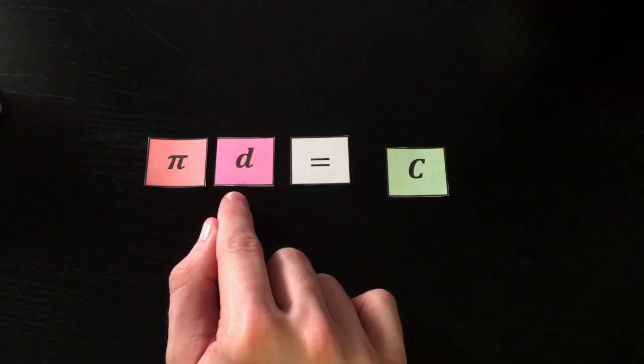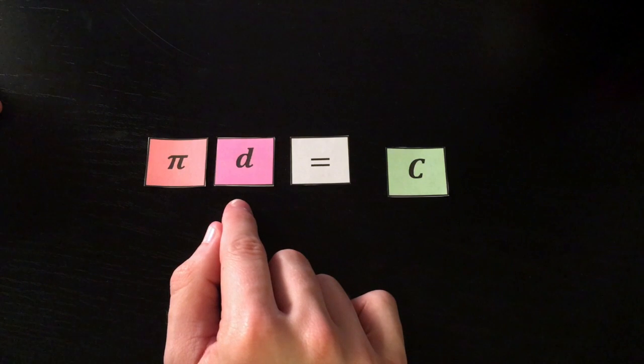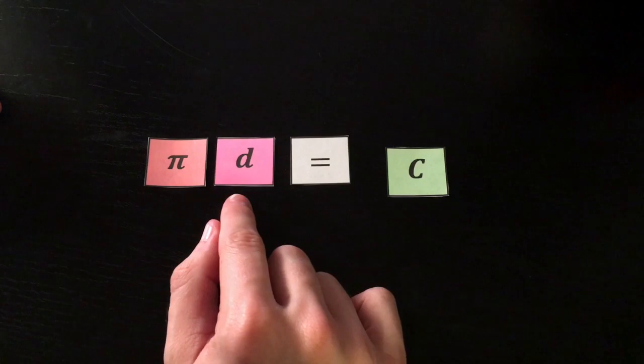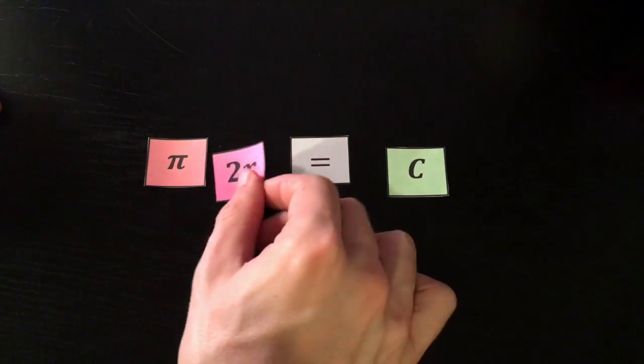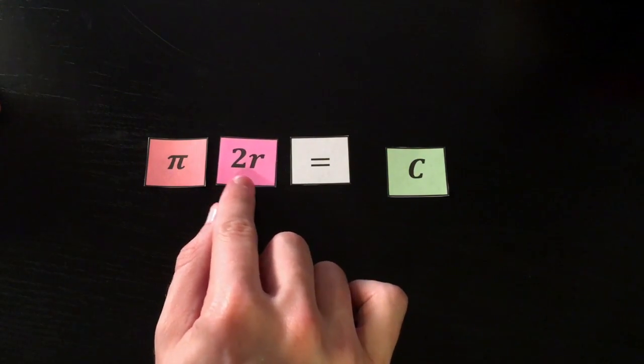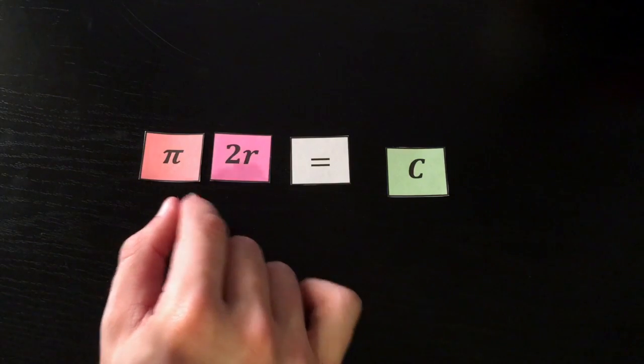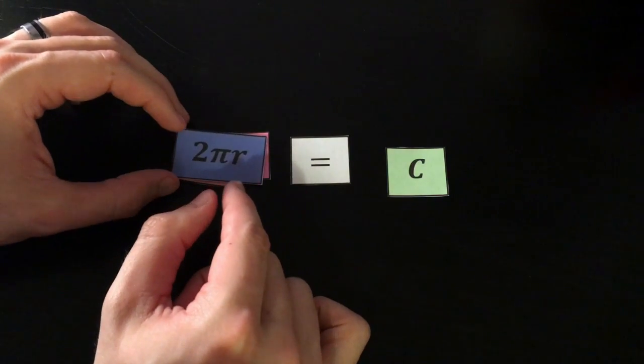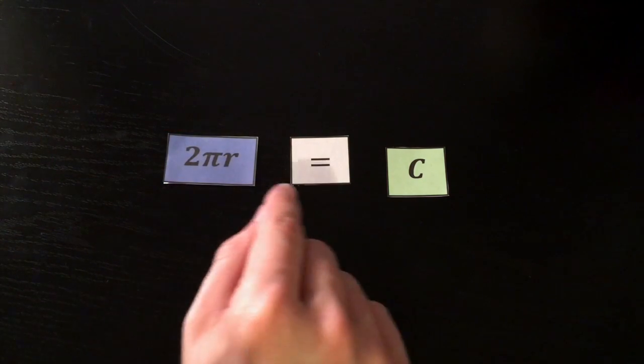What's something else we should know about the diameter? The diameter is two radii, or two times the radius. So this d is the same thing as 2r. And we don't usually write it as pi times 2r, we usually write it as 2πr. So 2πr equals c.